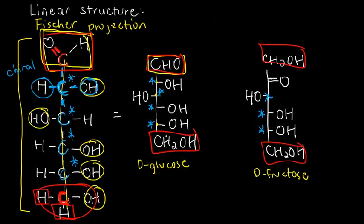For D-glucose, first, it's an aldehyde. So, we can say it's an aldose. Now, it has how many carbons? One, two, three, four, five, six. So, it's also a hexose.